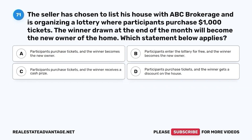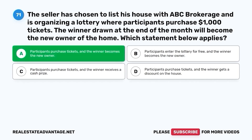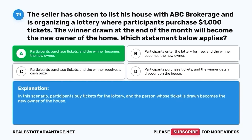Question 71. The seller has chosen to list his house with ABC brokerage and is organizing a lottery where participants purchase $1,000 tickets. The winner drawn at the end of the month will become the new owner of the home. Which statement below applies? A. Participants purchase tickets and the winner becomes the new owner. B. Participants enter the lottery for free and the winner becomes the new owner. C. Participants purchase tickets and the winner receives a cash prize. D. Participants purchase tickets and the winner gets a discount on the house. The correct answer is A. Participants buy tickets for the lottery and the person whose ticket is drawn becomes the new owner of the house.